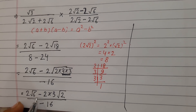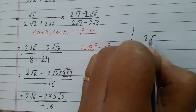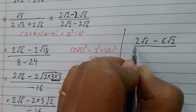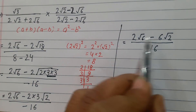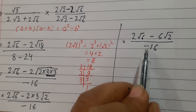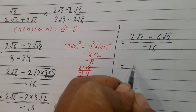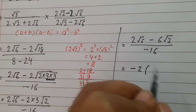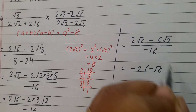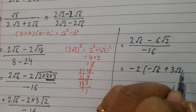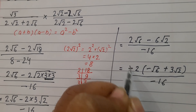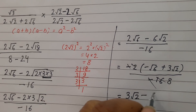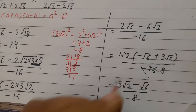Now we solve: the numerator is 2 root 6 minus 6 root 2, divided by minus 16. Since we do not keep a negative sign in the denominator, we take minus 2 as common from the numerator, making it positive. This gives us minus 2 times (minus root 6 plus 3 root 2) over minus 16. The negatives cancel, 2 cancels from 16 leaving 8, so the final answer is 3 root 2 minus root 6 over 8.